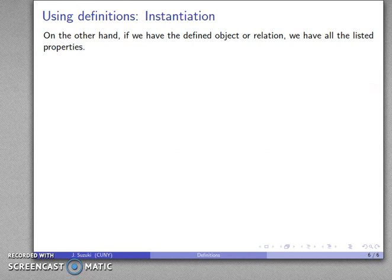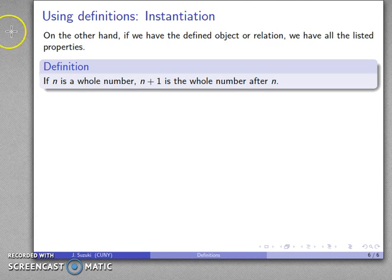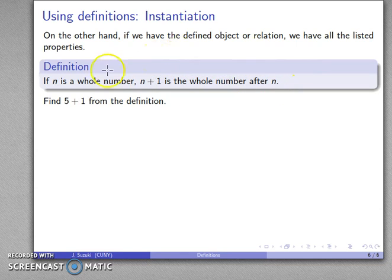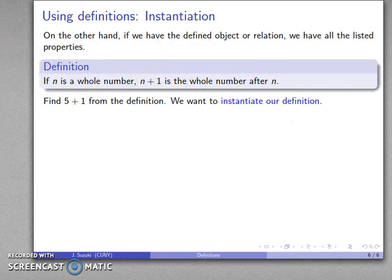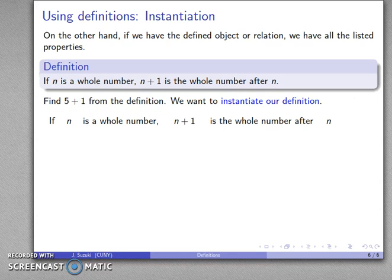The other way we can use definitions is called instantiation, which is just a fancy way of saying we're going to make a substitution. Once we've defined an object, we know that we have all of the listed properties of that object. For example, here is one way we can define whole numbers: if N is a whole number, N plus 1 is the whole number after N. Suppose we want to find 5 plus 1 from the definition. We need to instantiate the definition, and remember — paper is cheap, so let's write things down. First, write down the actual definition: if N is a whole number, N plus 1 is the whole number after N.